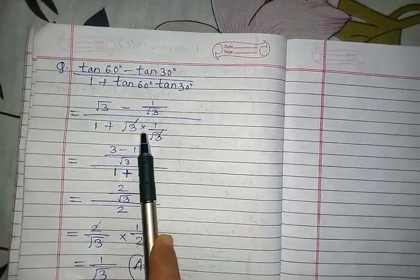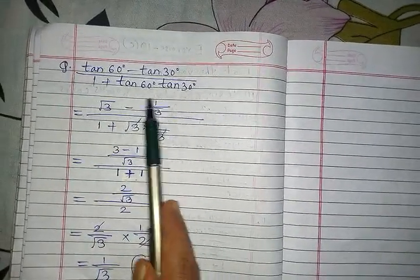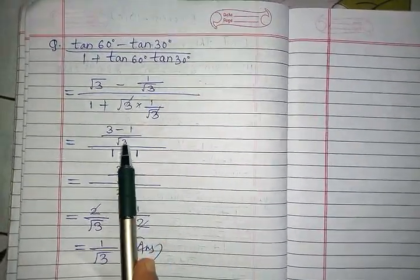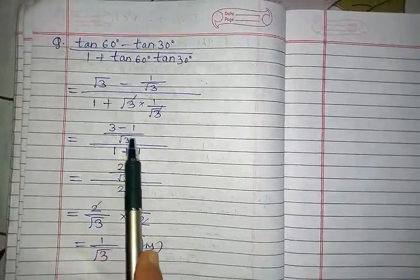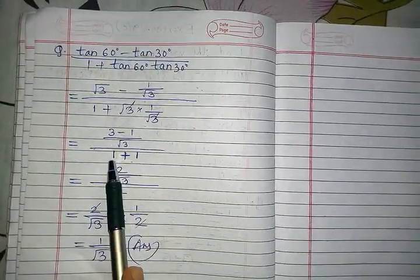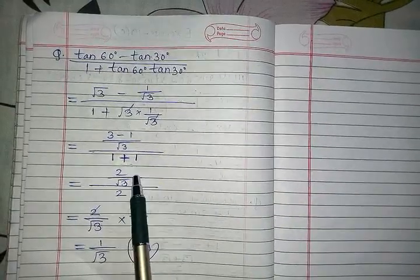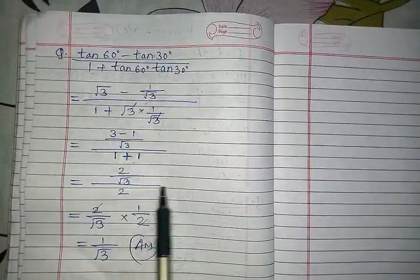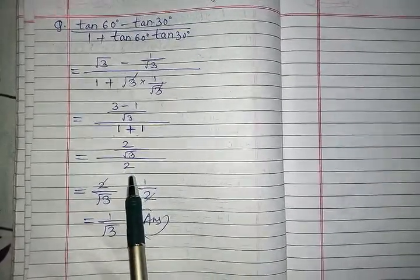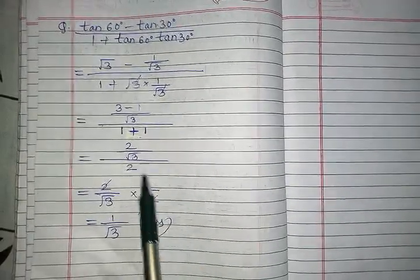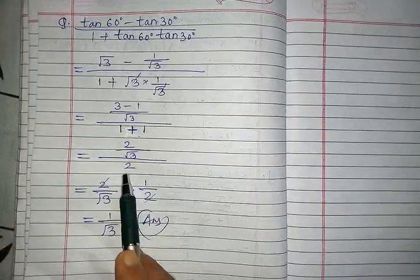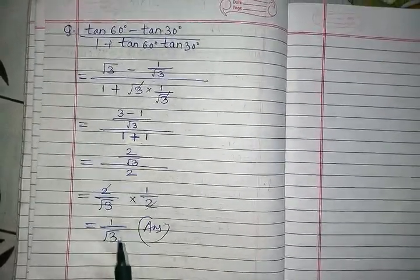In the numerator, √3 − 1/√3: since one term is a fraction we do LCM. LCM of 1 and √3 is √3. So √3·(√3/√3) − 1/√3 = (3 − 1)/√3 = 2/√3. In the denominator, 1 + √3·(1/√3) = 1 + 1 = 2. So we have (2/√3) / 2. Dividing by 2 is multiplying by 1/2, giving 2/(√3·2) = 1/√3. The answer is 1/√3.